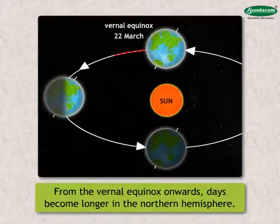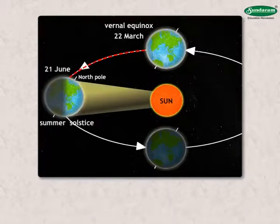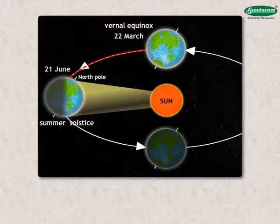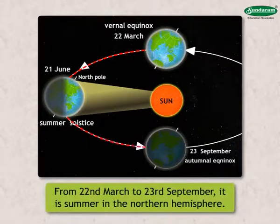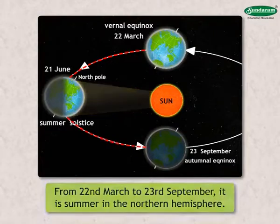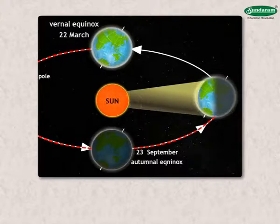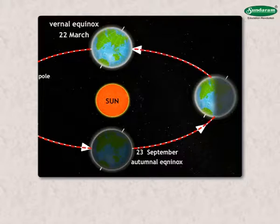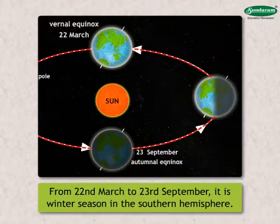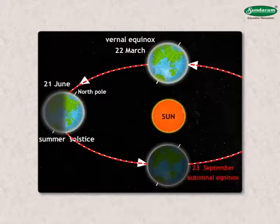Let us study seasons and their cycle. From the vernal equinox onwards, days become longer in the northern hemisphere. The rays of the sun gradually become perpendicular, and the midday sun reaches a greater height in the sky. As a result, the northern hemisphere gets more heat and temperature rises. Therefore, from 22nd March to 23rd September, it is summer in the northern hemisphere. During the same period, nights are longer in the southern hemisphere, rays of the sun become more slanting, and so less heat is received. Therefore, it is winter season in the southern hemisphere from 22nd March to 23rd September. The situation is just the opposite from 23rd September to 22nd March.